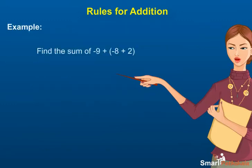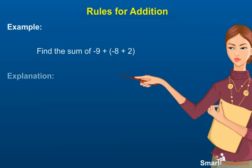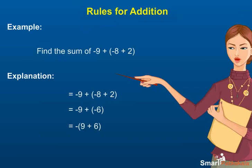Example: Find the sum of minus 9 plus (minus 8 plus 2). We first solve the bracket and get the sum of minus 8 and 2 as minus 6. Then we add minus 9 and minus 6 to get the sum as minus 15.